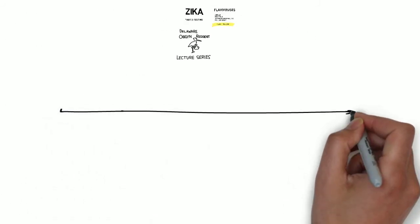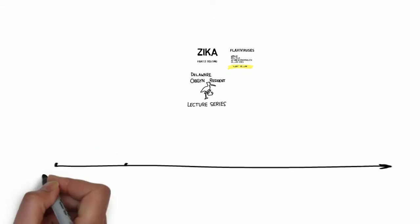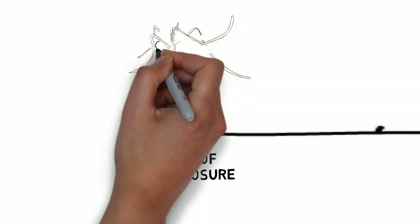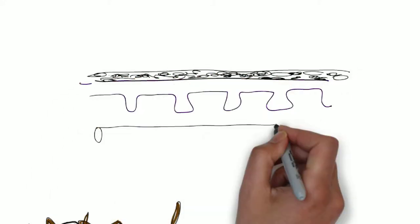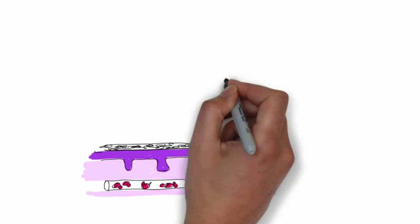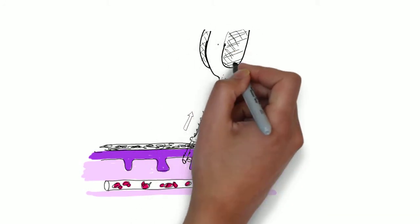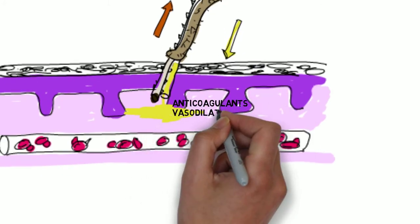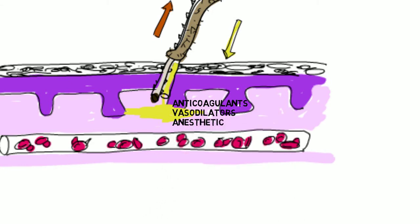Let's discuss the timeline for Zika infection and how that translates to diagnostic lab tests. The virus is introduced at the time of the bite. If the mosquito is taking blood, how does the virus get in? The proboscis of the mosquito is more complicated than just a hypodermic needle. The hypopharynx injects saliva and the labrum pulls out blood. The mosquito saliva contains anticoagulants, vasodilators, and anesthetic, all to facilitate the blood draw. The saliva is the stuff that elicits the immune response, the itching, and also happens to contain the virus.